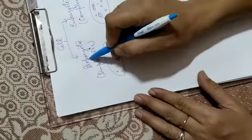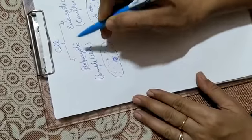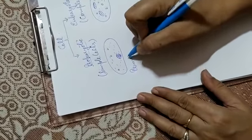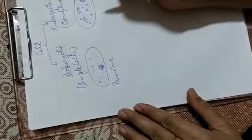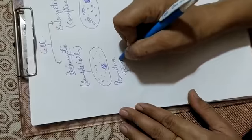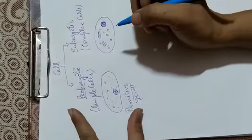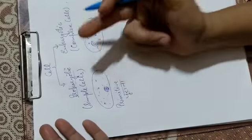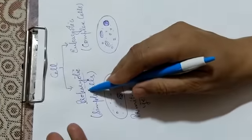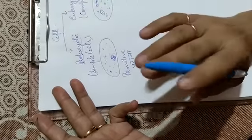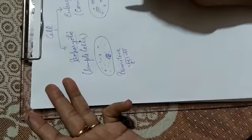Prokaryotic is a primitive cell. What does primitive mean? Primitive means old. So the prokaryotic cell is the first cell — the most ancient type of cell — and that cell still remains today.